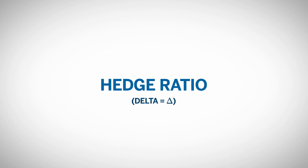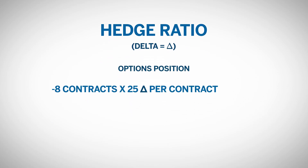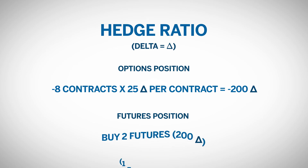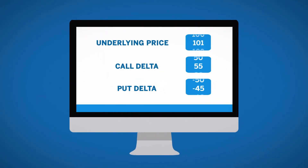Delta is used in calculating hedge ratios to establish a neutral or delta hedged position using the underlying futures. Let's say we sold 8 call options that have a 25 delta — this would give us a delta position of negative 200. To be delta neutral, we would need to buy 2 underlying futures contracts. Delta is dynamic and changes with the movement in the underlying, meaning delta neutral ratios and other hedge ratios using options are also dynamic and subject to change.